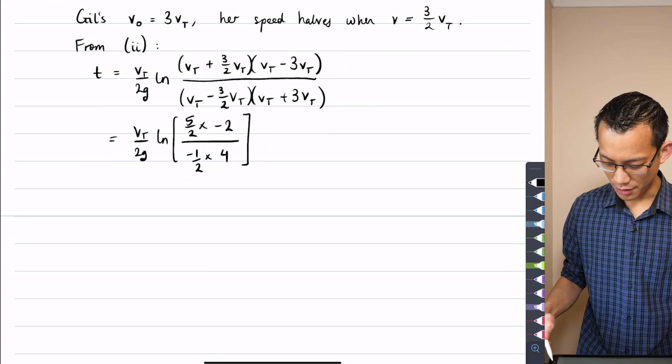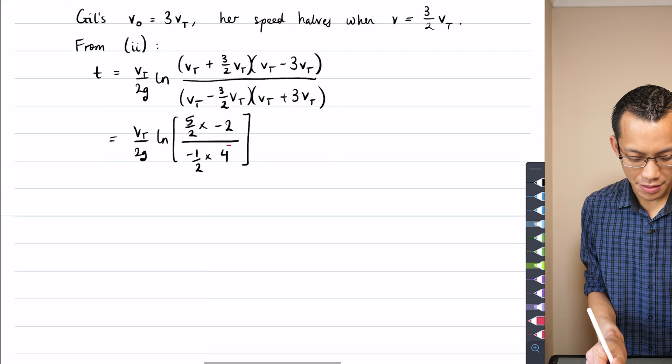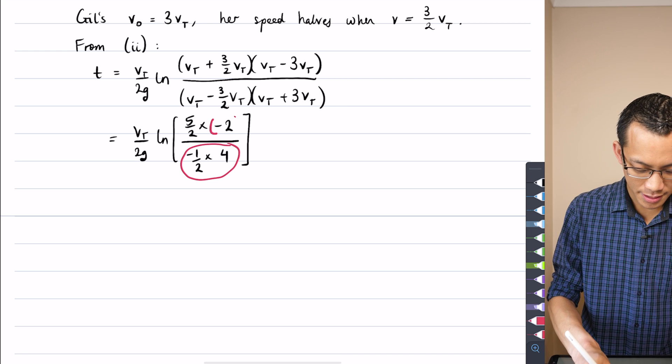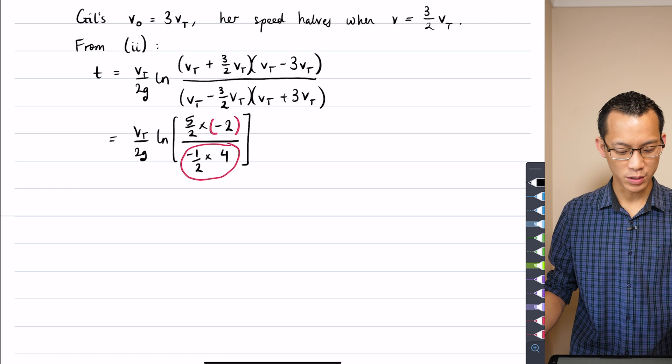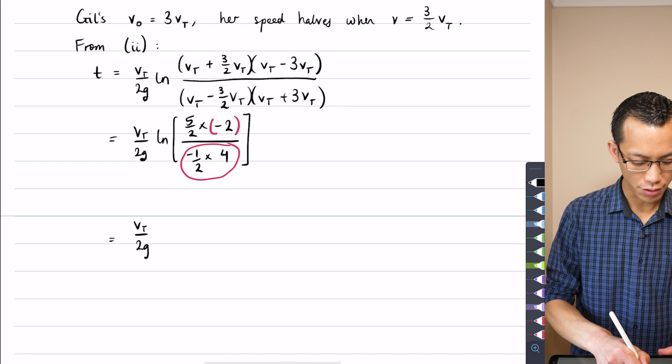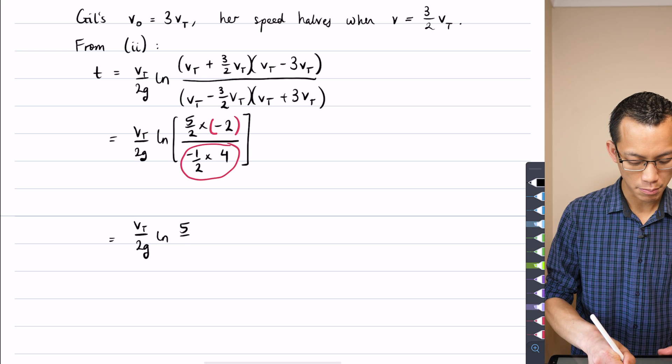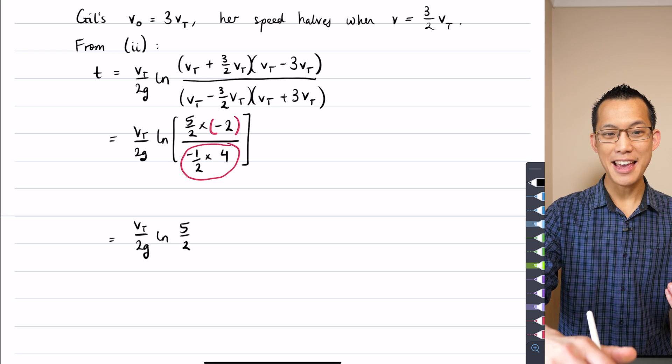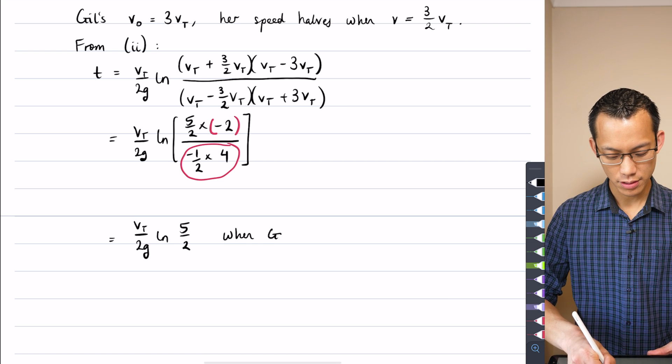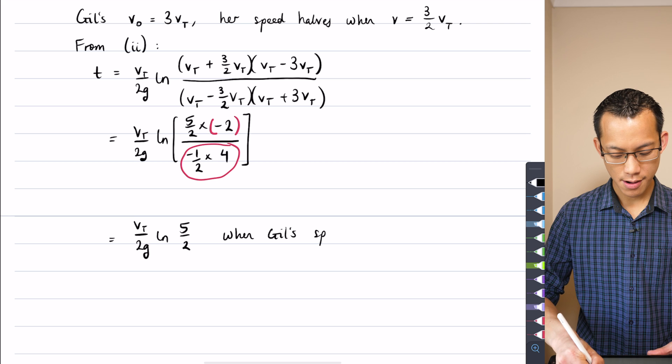And you can see all this cancelling that's happening. It's even more than before. This is all negative 2, and this negative 2 at the top just perfectly cancels with that, leaving you with the 5 over 2 which we got before. So I'll write that just for completeness. So this is the same time which is when Jill's speed halves.